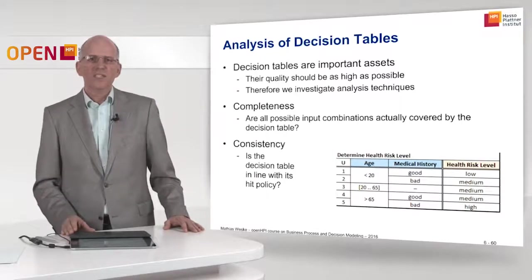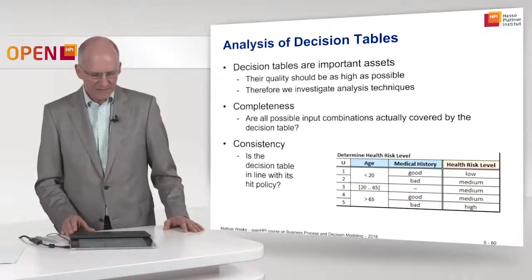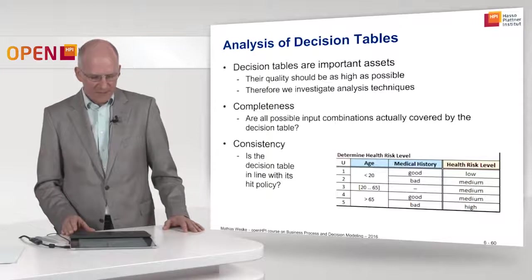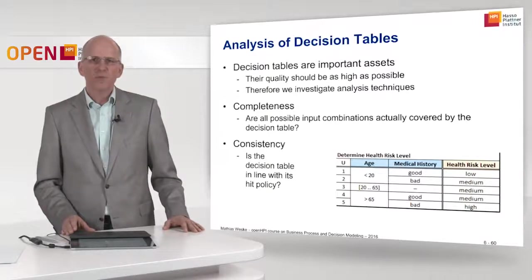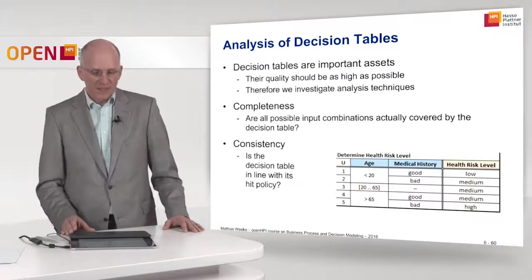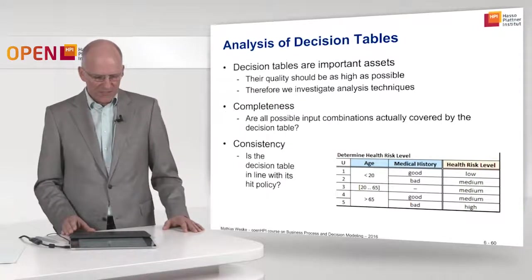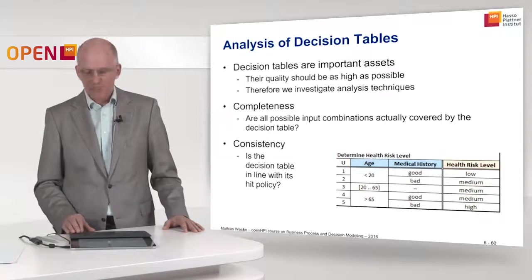We look at two aspects when we analyze decision tables. First of all, completeness, and then the consistency of decision tables. Completeness refers to the question: are all possible input combinations actually covered by the decision table? Or are there input combinations that are not covered? In the second analysis question, we look at consistency: is the decision table actually in line with its hit policy?